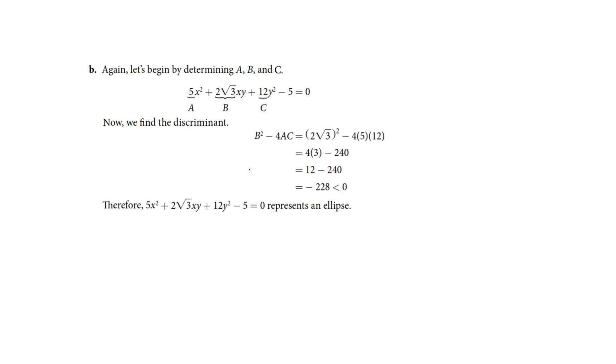When we do it again here, we've got b squared minus 4a is this, c is this. Crunch that down. We get negative 228. Once again, we're less than zero. So once again, we get an ellipse.